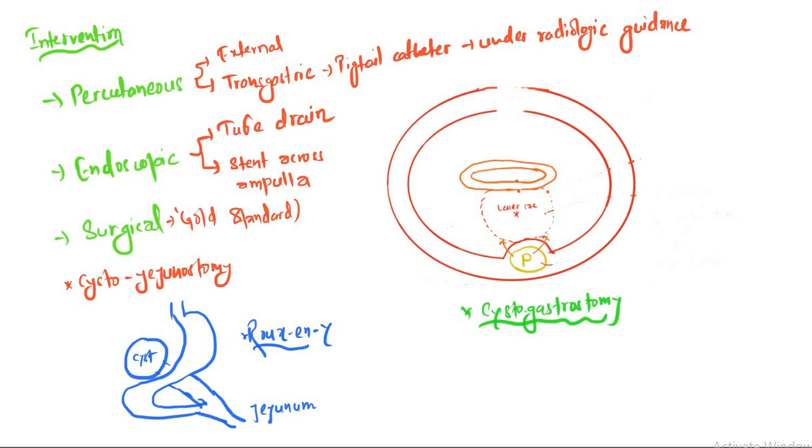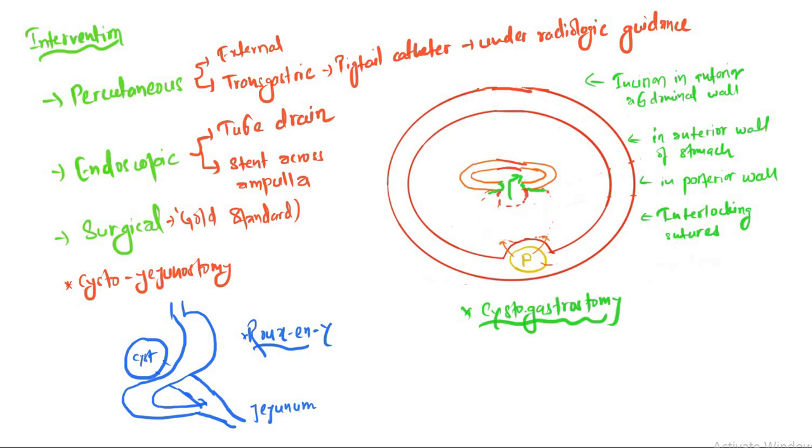This is another operation called cystogastrostomy. First, we perform an incision on the anterior abdominal wall. After that, we perform an incision on the anterior wall of the stomach, and then in the posterior wall of the stomach. Then we perform interlocking sutures, and the contents are emptied inside the stomach. The rest of the structures are closed: the anterior wall of the stomach and the anterior abdominal wall is closed at last.